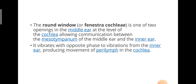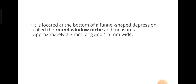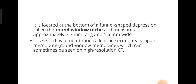It vibrates with opposite phase to vibrations from the inner ear, producing movement of perilymph in the cochlea. It is located at the bottom of a funnel-shaped depression called the round window niche and measures approximately 2–3 mm long and 1.5 mm wide. It is sealed by a membrane called the secondary tympanic membrane, also called the round window membrane, and this can sometimes be seen on a high resolution CT.